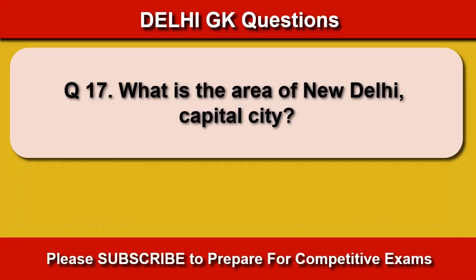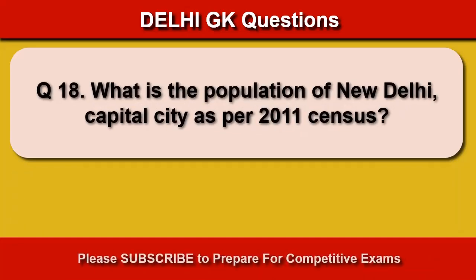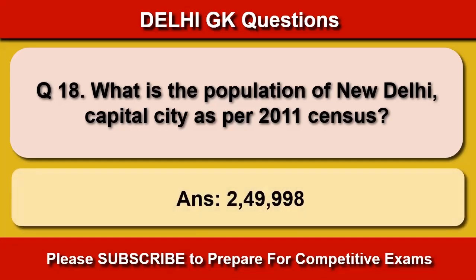What is the area of New Delhi, the capital city? 42.7 square kilometers. What is the population of New Delhi, the capital city, as per the 2011 census? 2,49,998.